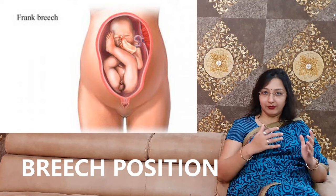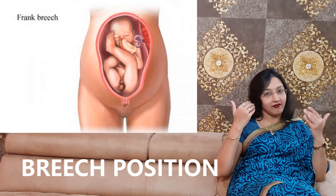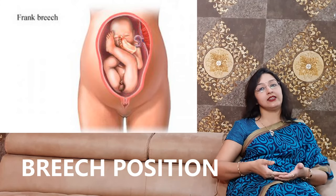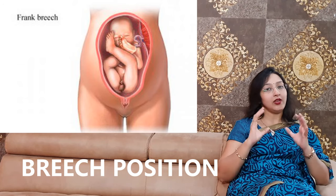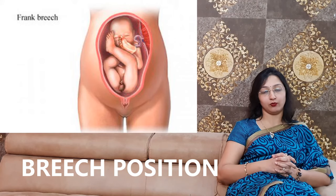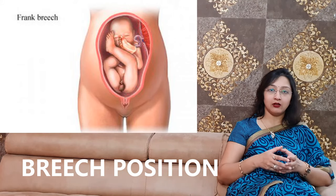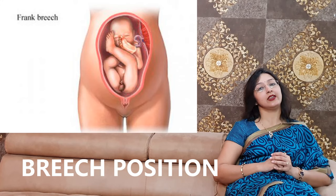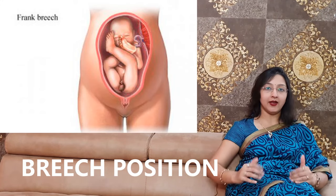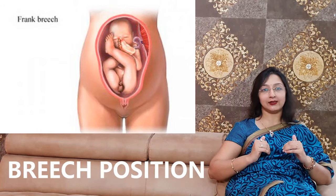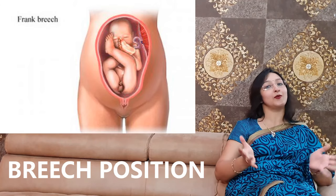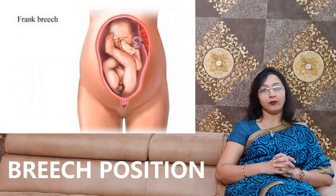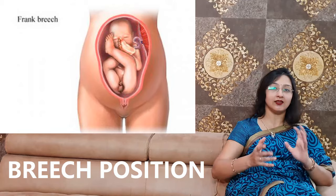Normally, when a child is in the mother's womb, the head is in the lower side, which is the normal position. When the head is in the upper side and the buttocks are in the lower end, we call it breech position. Breech position occurs in more than 3-4% of children.